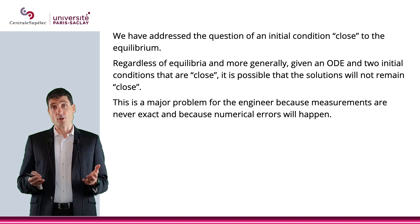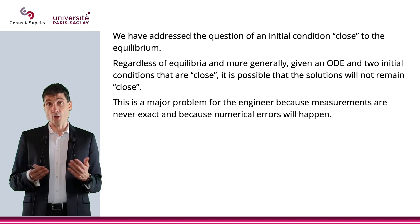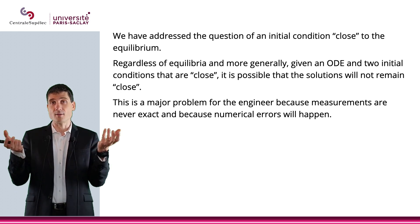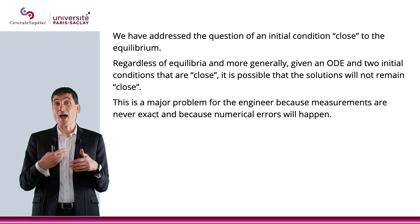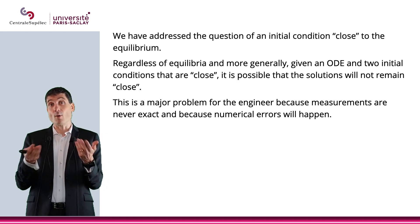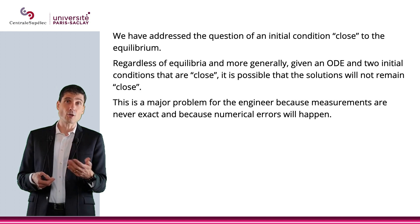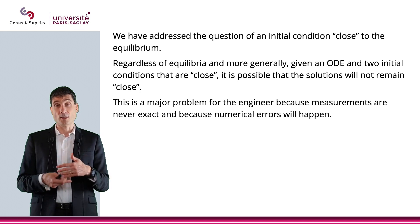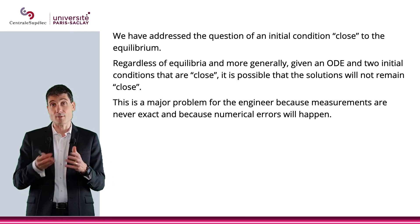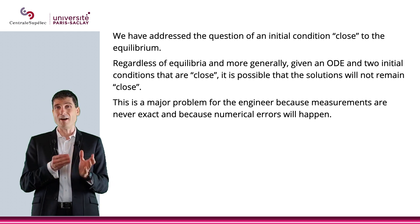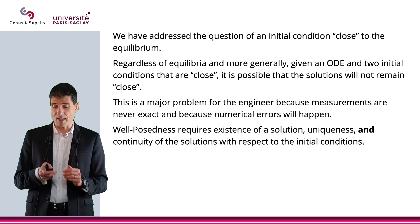Now there is a more general question: if you consider two initial conditions that are close to one another — two Y0s that are close — will the solutions to the IVP coming from these Y0s be close or not? And if the answer is no, that's really terrible news, because it means that if you have a measurement error, a numerical problem, or an approximation error, then the whole thing will go astray. So it's really bad news.